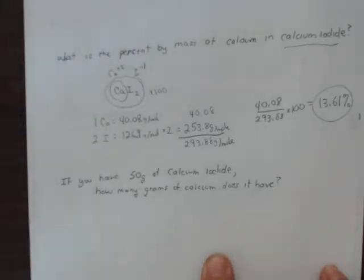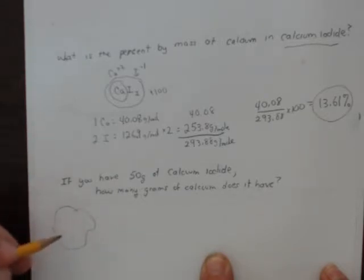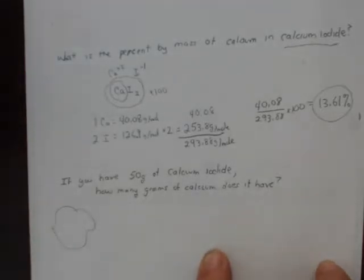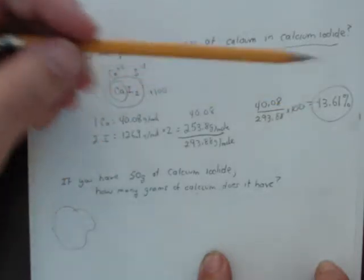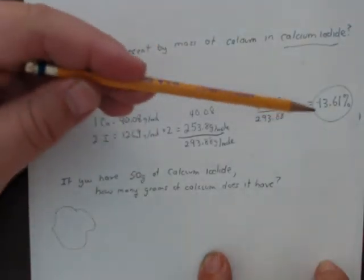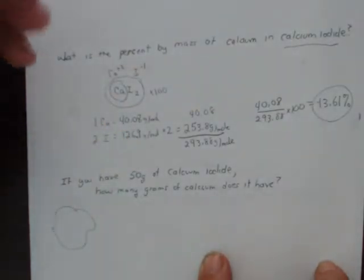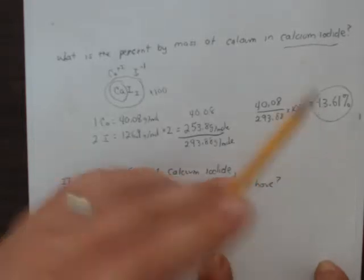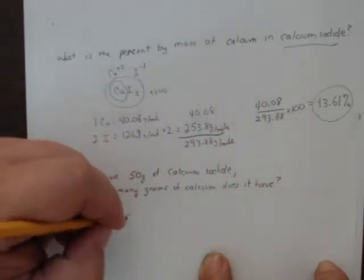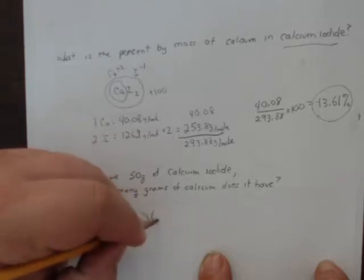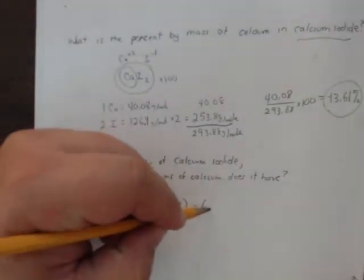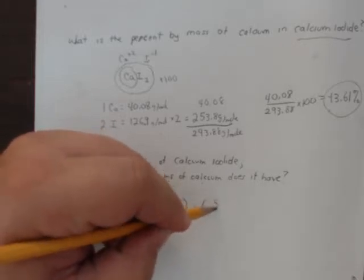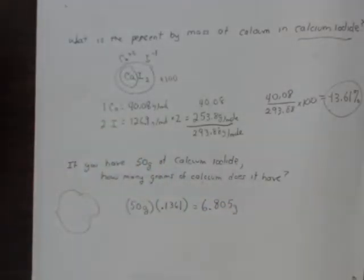Now let's apply this. Say you've got 50 grams of calcium iodide — how many grams of calcium is in this 50-gram sample? You know that any calcium iodide is 13.61% calcium. So all you need is that percent of that amount: 50 grams × 0.1361 = 6.805 grams of calcium.